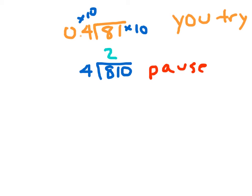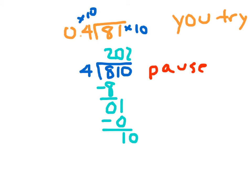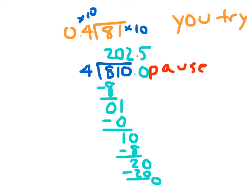4 goes into 8 two whole times. 2 times 4 is 8. 8 minus 8 is 0. Bring down the 1. 1 divided by 4 is 0 because 0 times 4 is 0 and 1 minus 0 is 1. Bring down the 0. 10 divided by 4 is 2 because 2 times 4 is 8 and 10 minus 8 is 2. At this point I need to add a decimal point and bring down a 0. 20 divided by 4 is 5 because 5 times 4 is 20 and 20 minus 20 is 0. So I place the decimal point and my answer is 202.5.